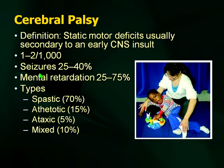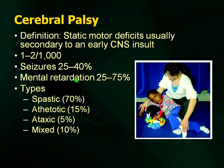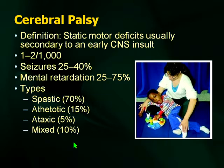Cerebral palsy is something you'll see all the time in practice. Remember it's defined as a static motor deficit — CP is really a motor problem, not necessarily a cognitive problem, although mental retardation is seen in about half of kids. Seizures — though you might think they occur in all kids — actually occur in less than half. The frequency of CP is quite high: one to two per 1,000. Most examination questions will likely be about etiology.